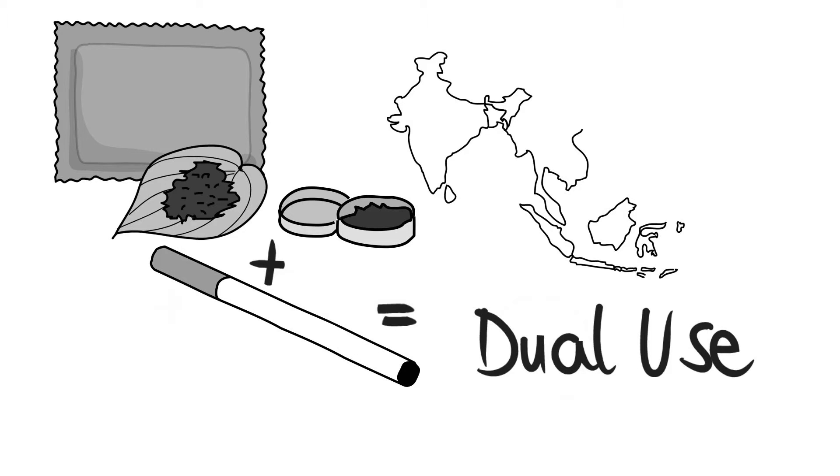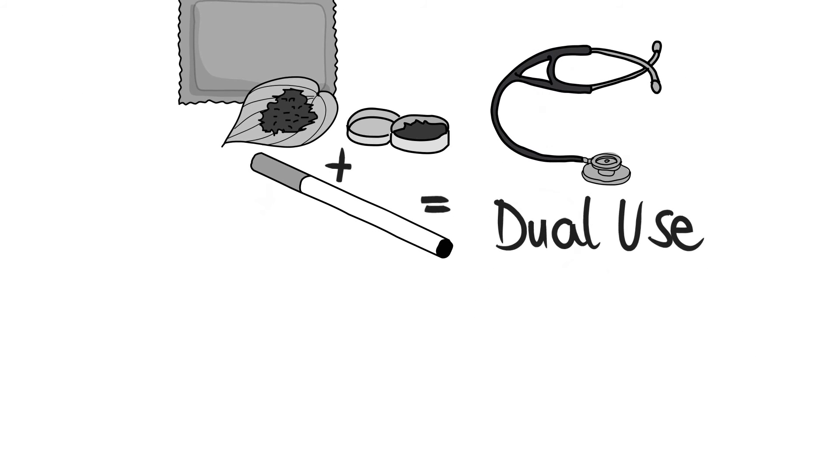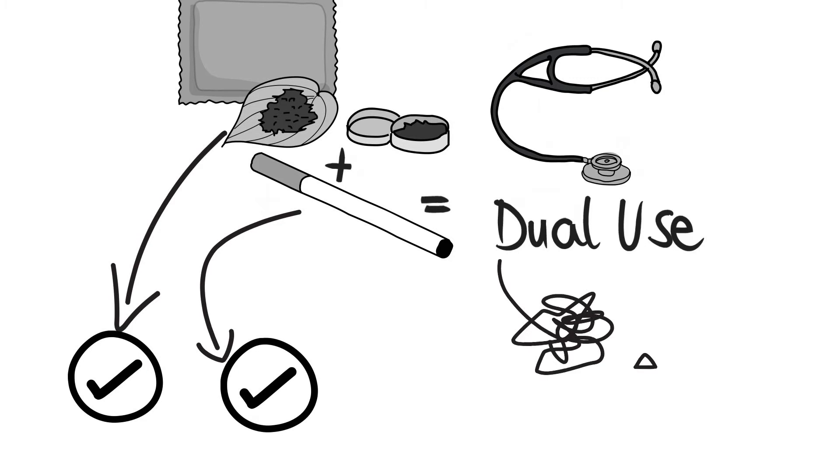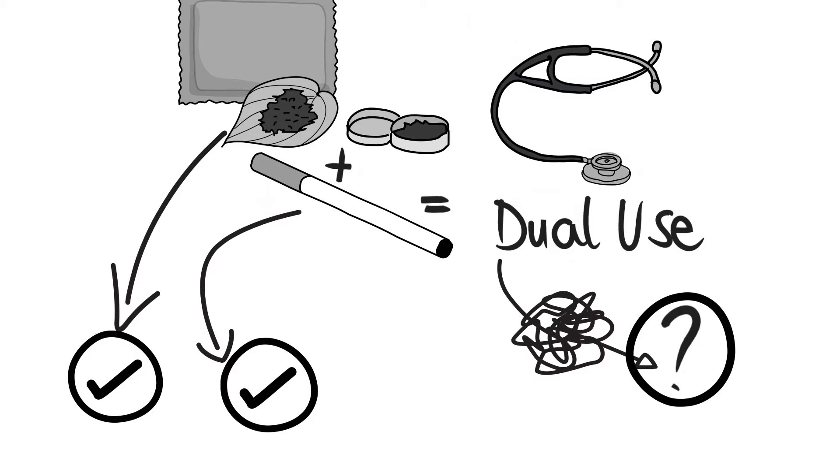Specific health consequences from combustible tobacco use and smokeless tobacco use are well documented. However, less information is known about dual users' additional risks. Dual use is concerning because it has the potential to prolong nicotine dependence and slow reductions in prevalence.